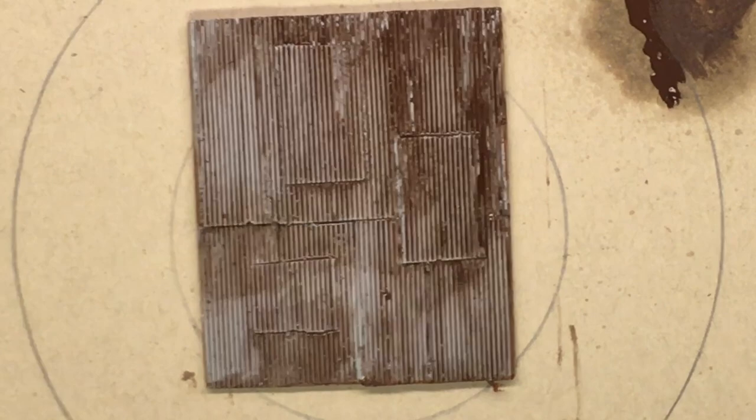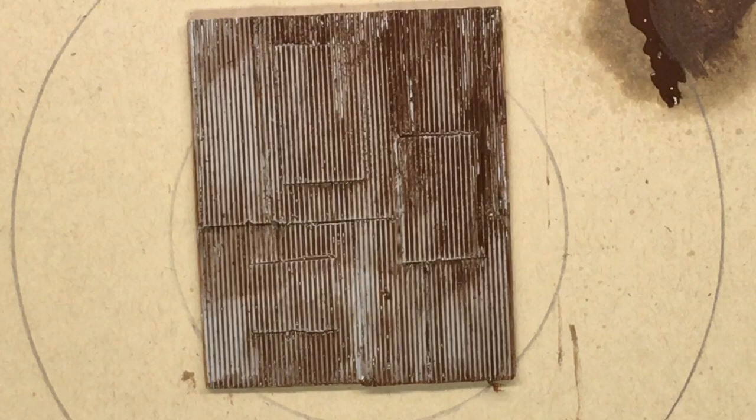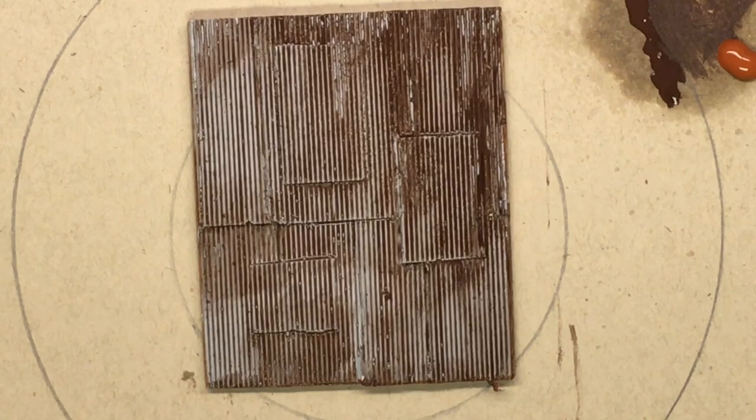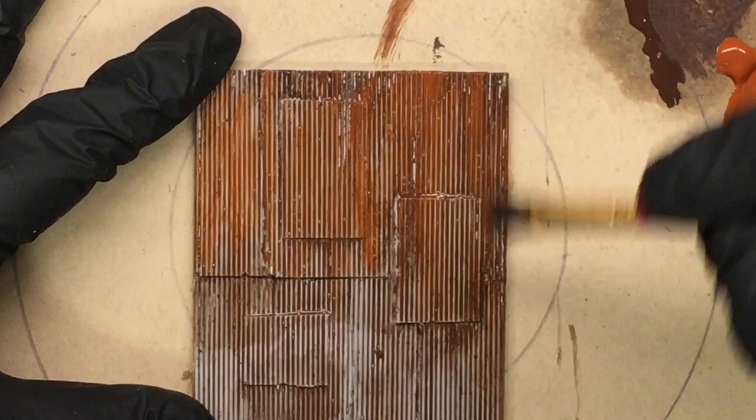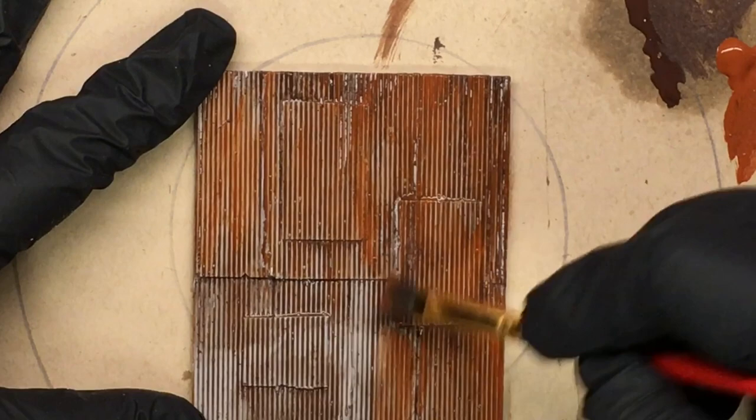This is burnt sienna. Now, this is a very nice rust color to my eye. And I'm going to start applying it. And again, I'm not trying to cover the whole thing. I'm just putting the color on in different areas because I want a lot of variety. Again, I'm not trying to paint this a reddish rust color. I'm just trying to get a variety of colors on it.